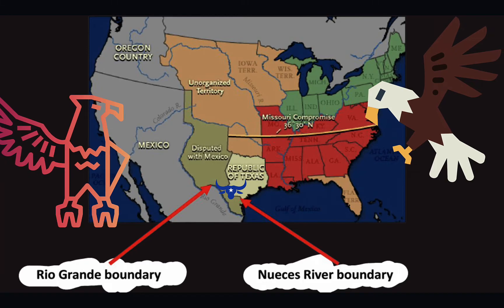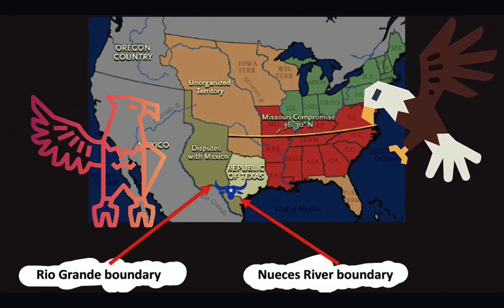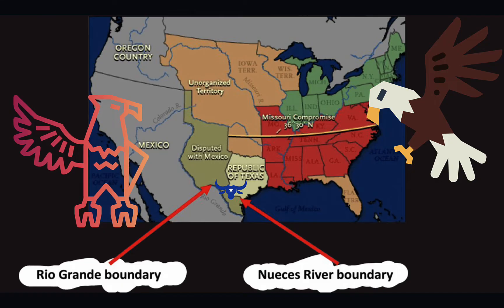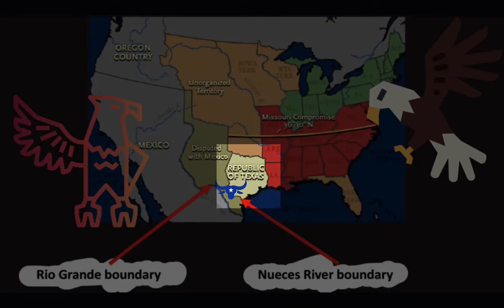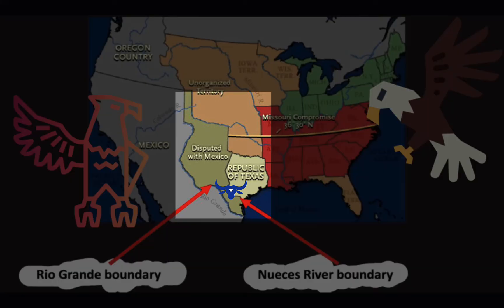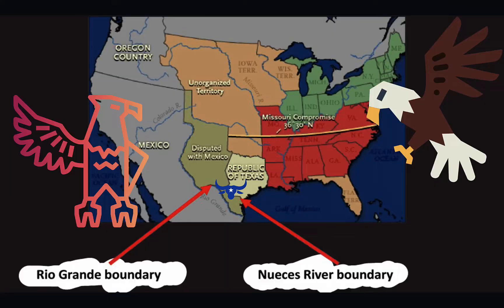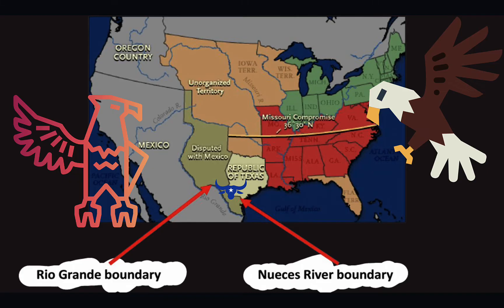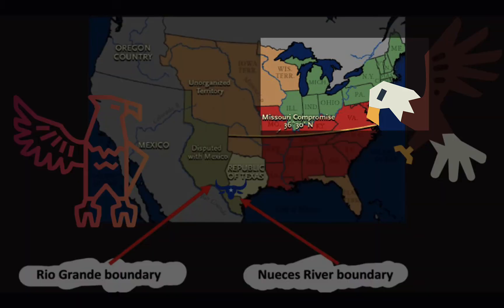We have to acknowledge a few things this map does a great job of illustrating. Number one, if you look at the capital letters that say 'Republic of Texas,' you can see how small Texas was according to what Mexico declared — Mexico said the Nueces River was the boundary. Texans, on the other hand, said no, our boundary is the Rio Grande. There was massive tension over borders. Everything in red is a state that has accepted slavery, and everything in green is a free state.